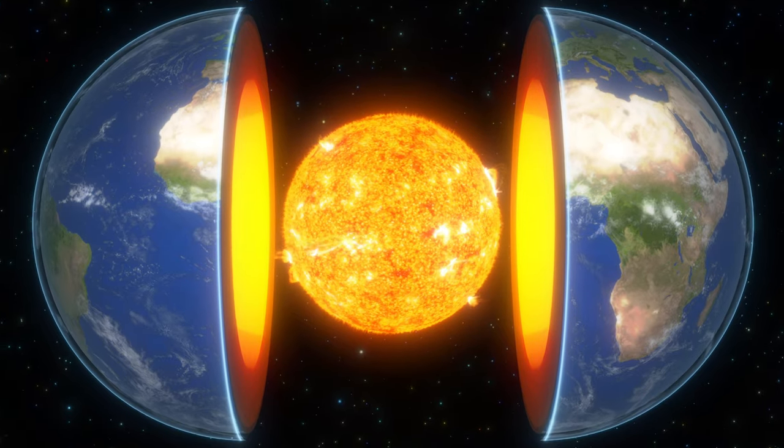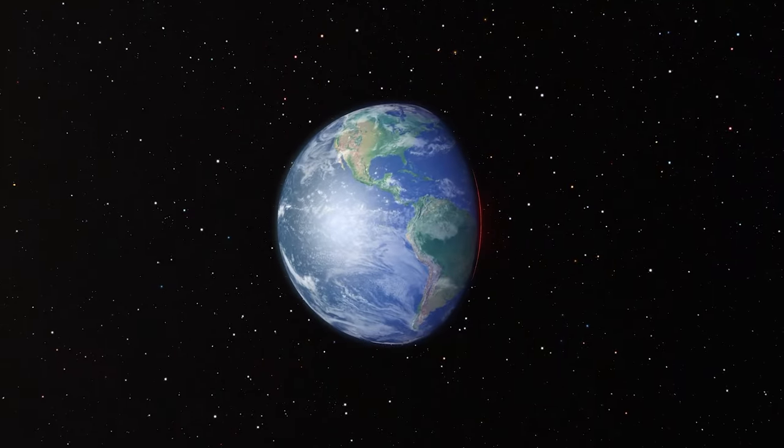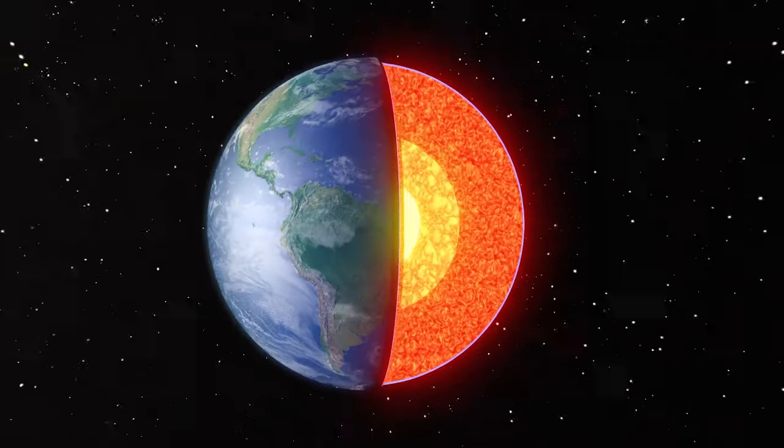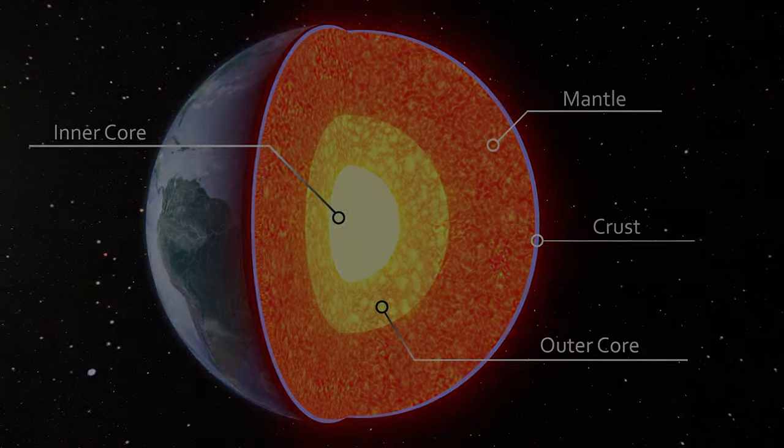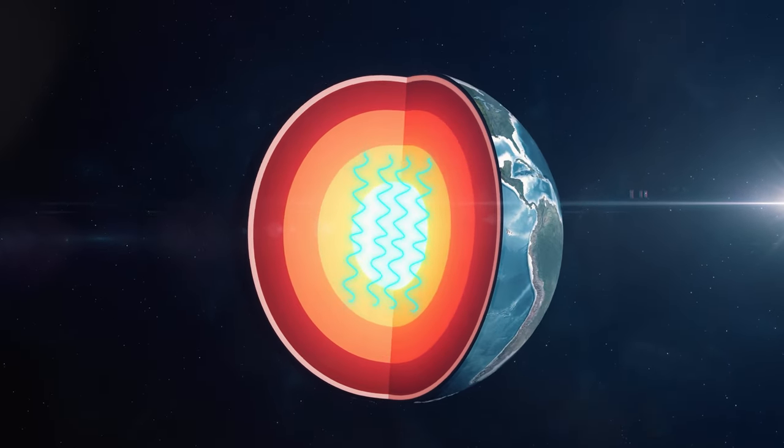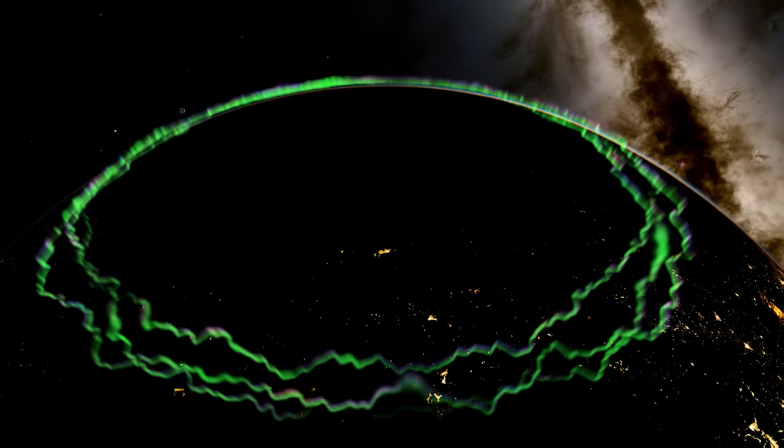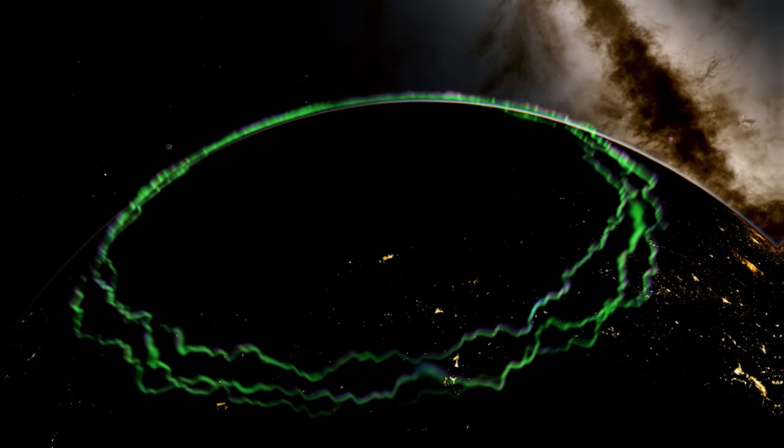Deep inside the Earth is the heart of this magnetic force. Here, in the outer core, a bubbling ocean of molten iron generates the magnetic field. This motion, caused by the Earth's rotation, creates the dynamo effect,